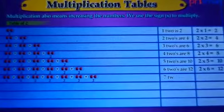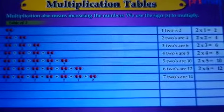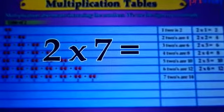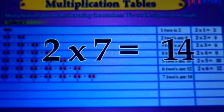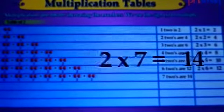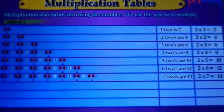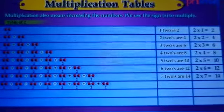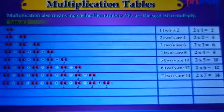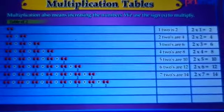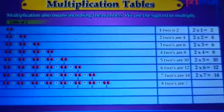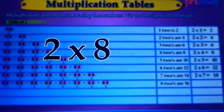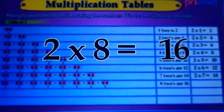Seven twos are fourteen. Two into seven equals to fourteen. Eight twos are sixteen. Two into eight equals to sixteen.